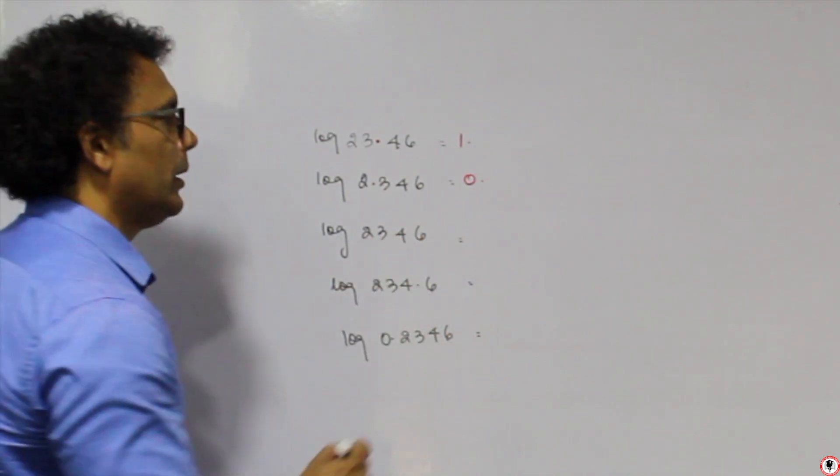When checking anti-log, you consider the digits after the decimal. For our result 1.3703, the mantissa is 0.3703, so we check 0.37 in column 0 with a mean difference of 3. Looking up 0.37 in 0 gives 2744. The mean difference for 3 is 2. So 2744 plus 2 = 2746. Since the characteristic is 1, we place the decimal after 2 digits: the answer is 27.46.